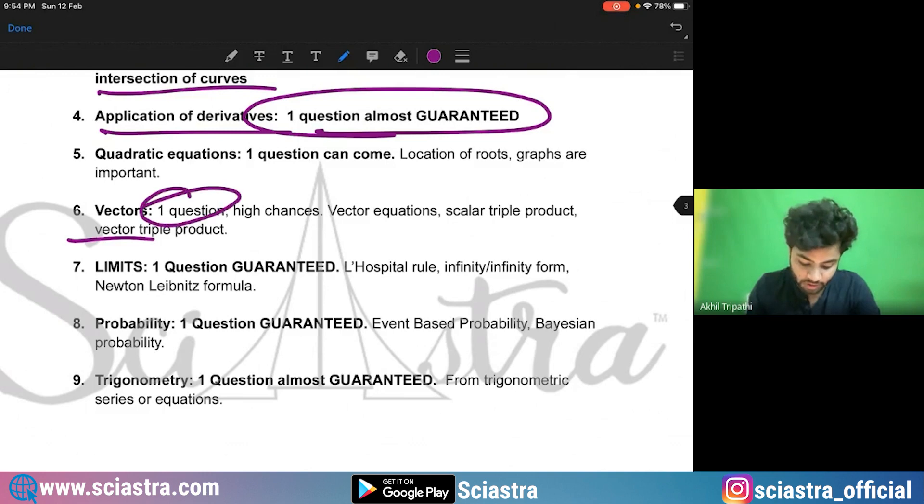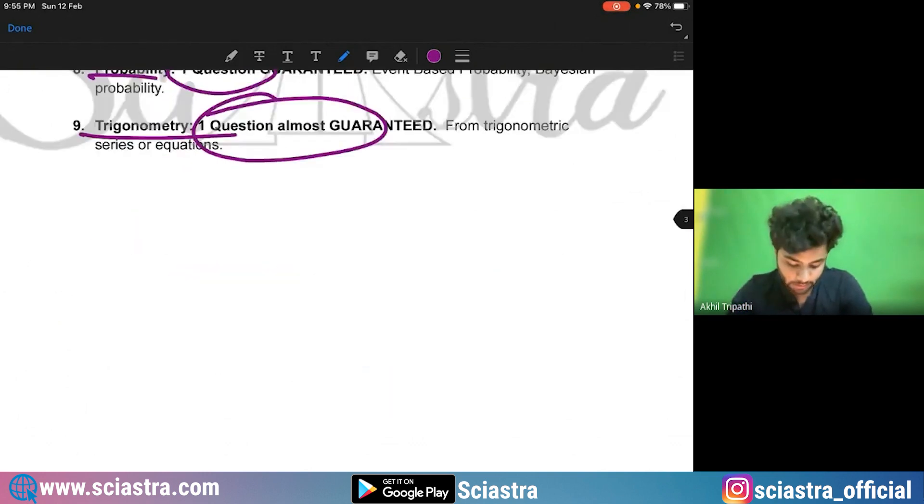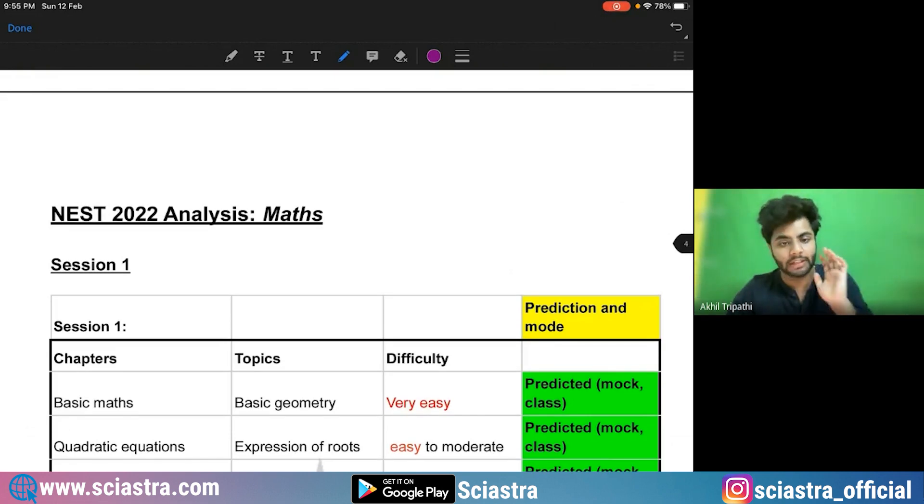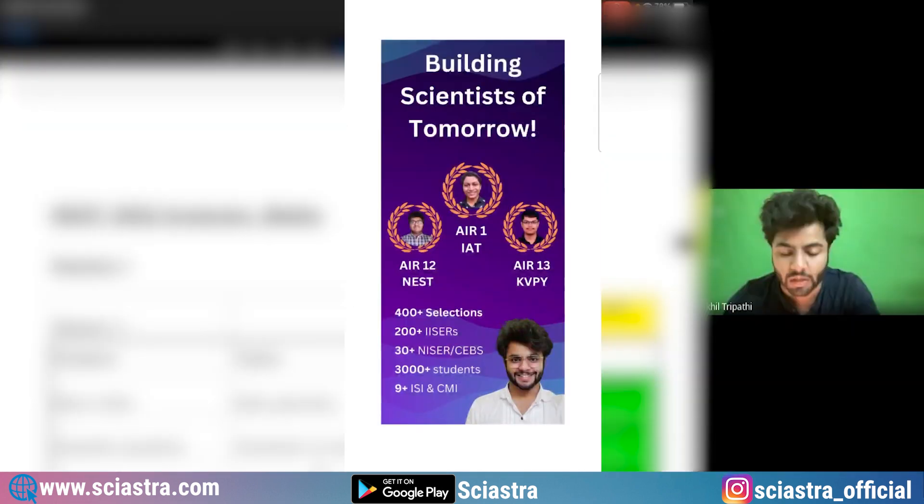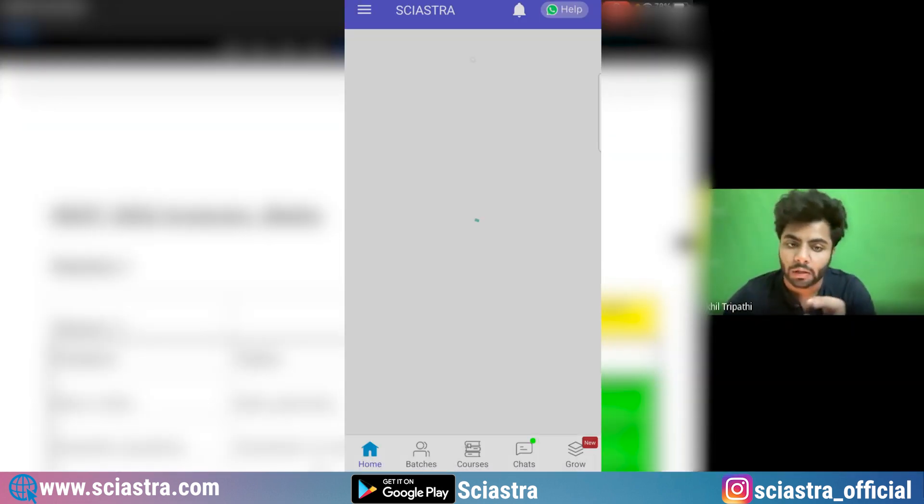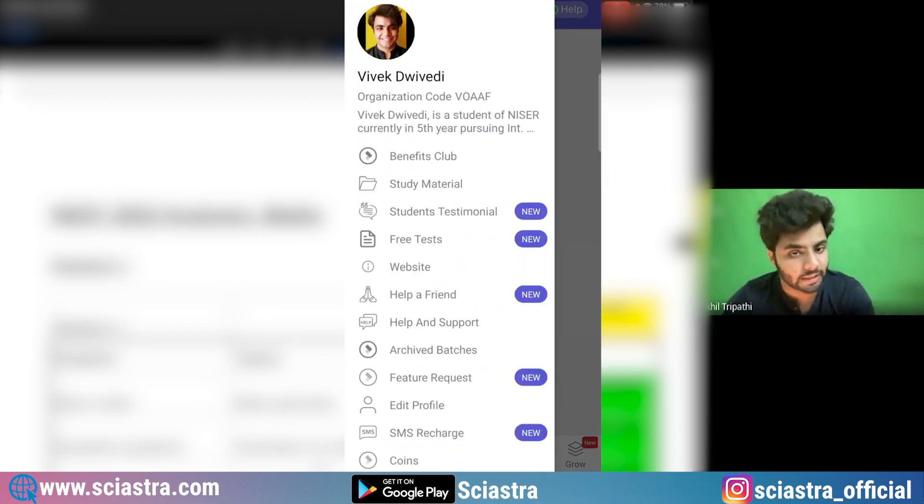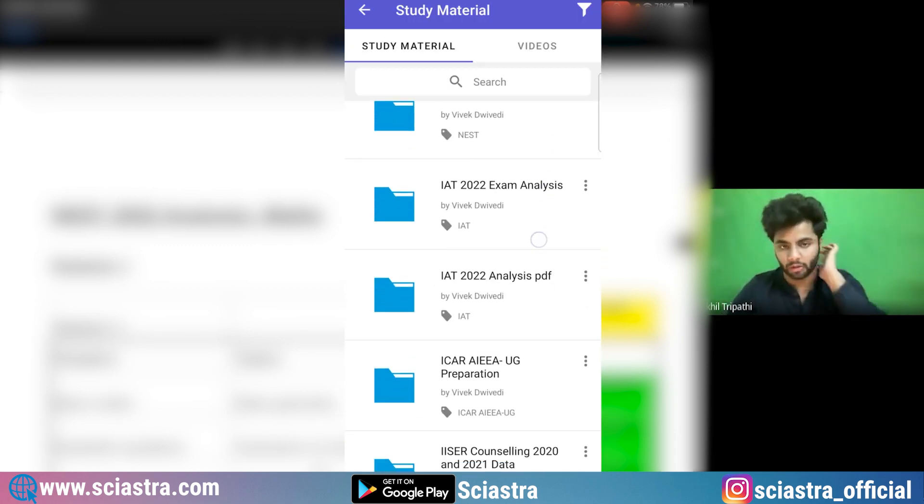Vectors, again, one question. Limits, one question. Probability, one question. Trigonometry, one question. All of this PDF you will get for free in our Sciastra app. Just go to the Sciastra app and you will go to free study material section and you will get all of these important topics and chapters.